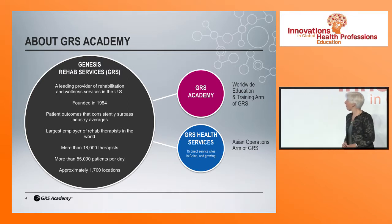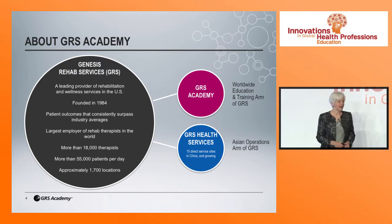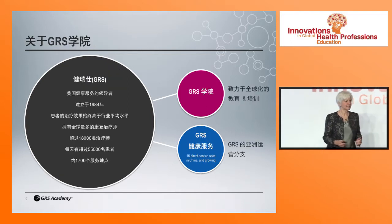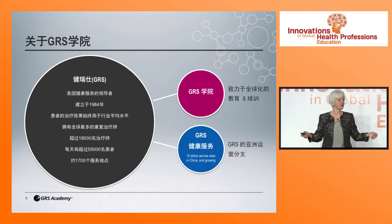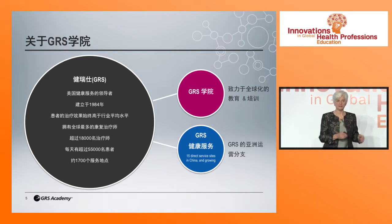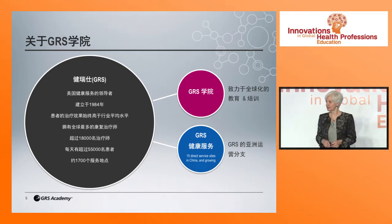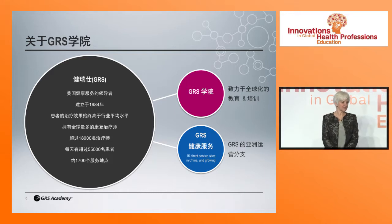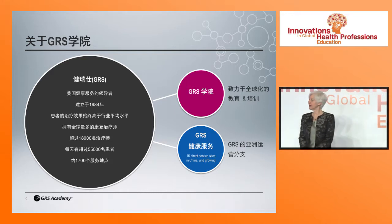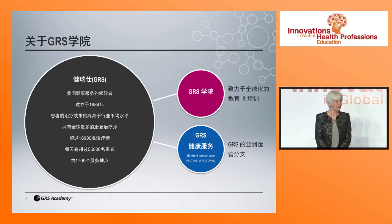One challenge we recognized is that Chinese therapists have a generic rehabilitation degree, whereas in the United States we have specifically occupational therapists, speech therapists, and physical therapists — those are separate and unique degrees. So our first set of curriculum involved upskilling rehab therapists in those three distinct areas.